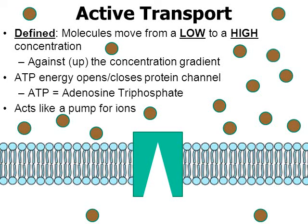Active transport acts like a pump — a way for molecules and ions to be pumped either into the cell or out of the cell, depending on where they're needed. If you think about any kind of pump, like a bicycle pump to pump up a tire or a soccer ball, you need to input some energy for a pump to work. In the world of cells, energy comes in the form of a molecule called adenosine triphosphate, ATP.